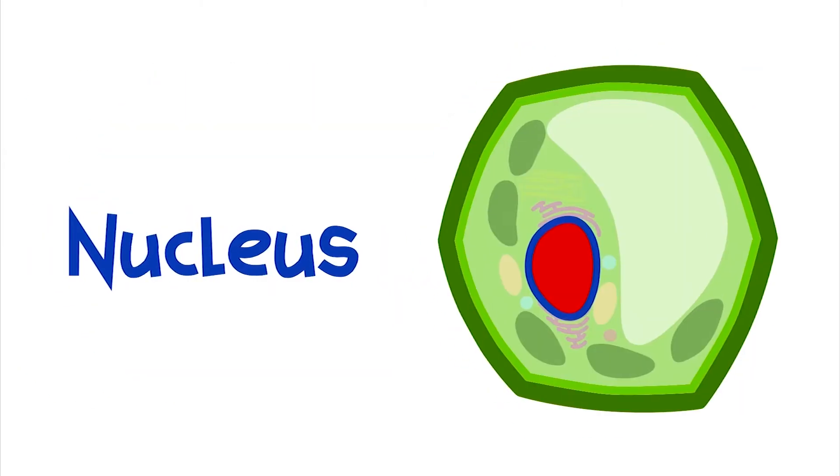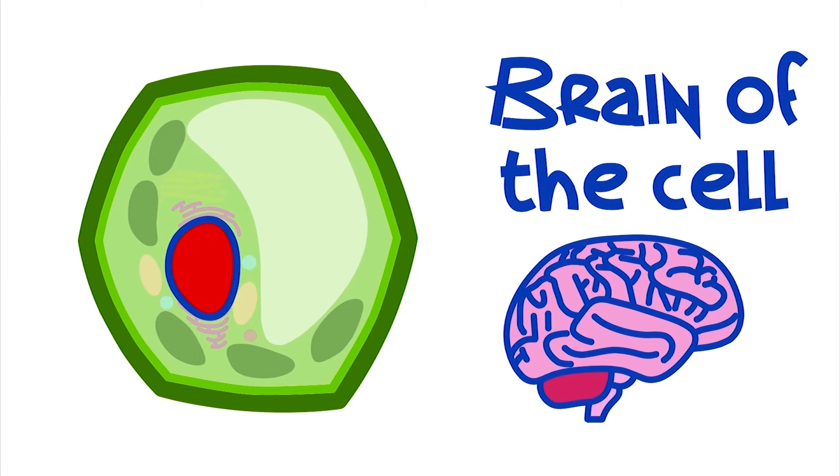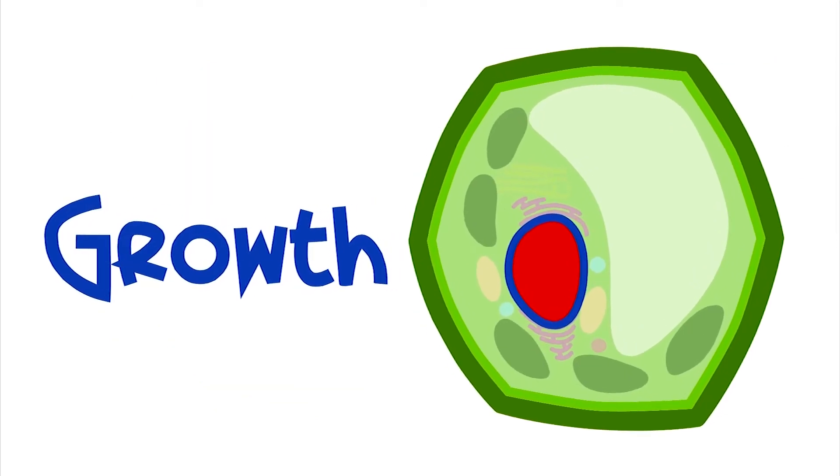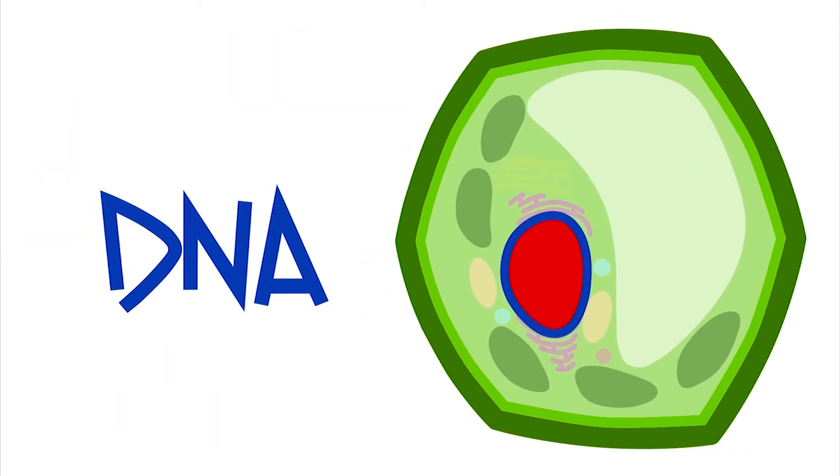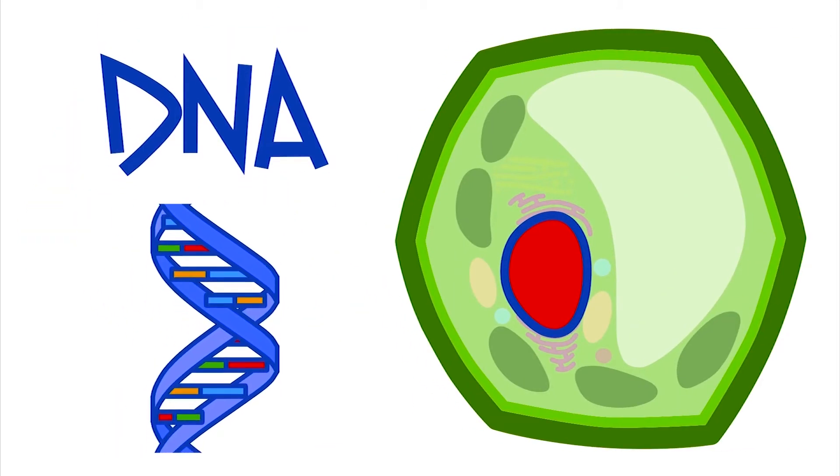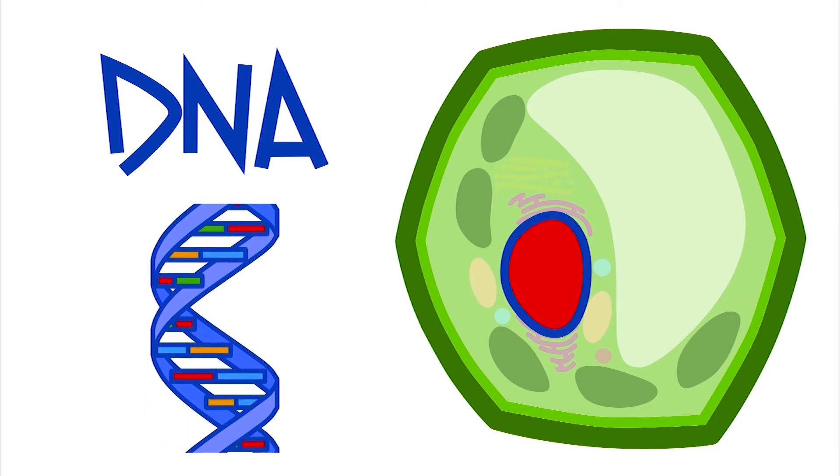Now we get the nucleus, which we can consider the brain of the cell. It is responsible for organizing the growth and reproduction of the cell. It is at the nucleus of the cell that we find the DNA, which is the genetic material responsible for transmitting the characteristics of each living being.